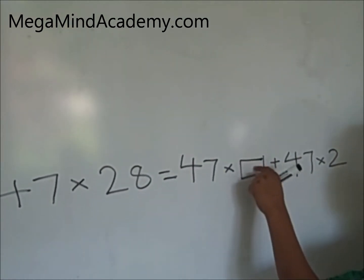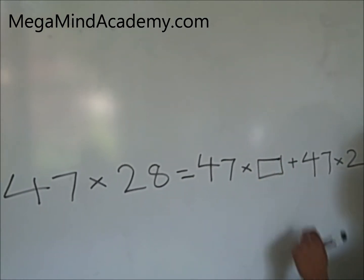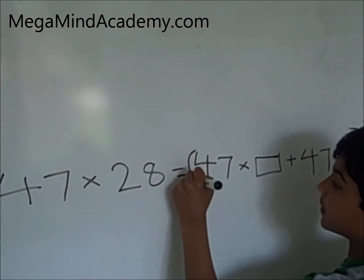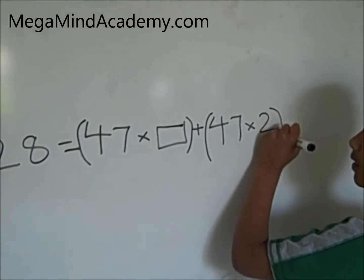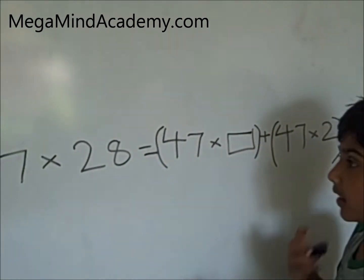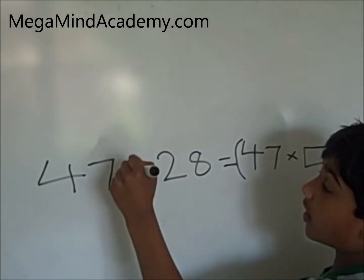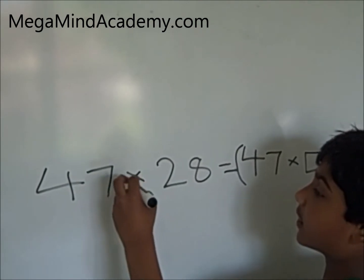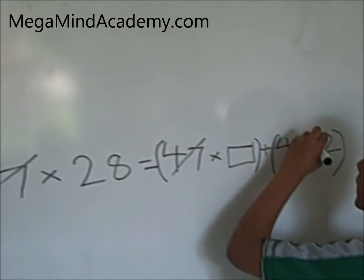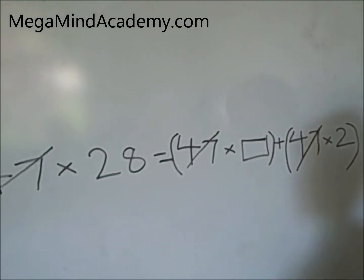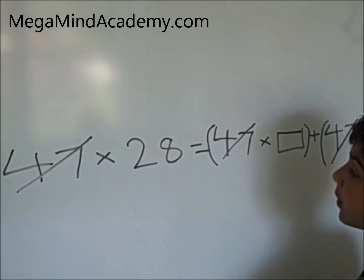We need to find out what number is in this box. So let's put parenthesis. And let's cross out all the common factors. The common factors are 47, 47, and 47.